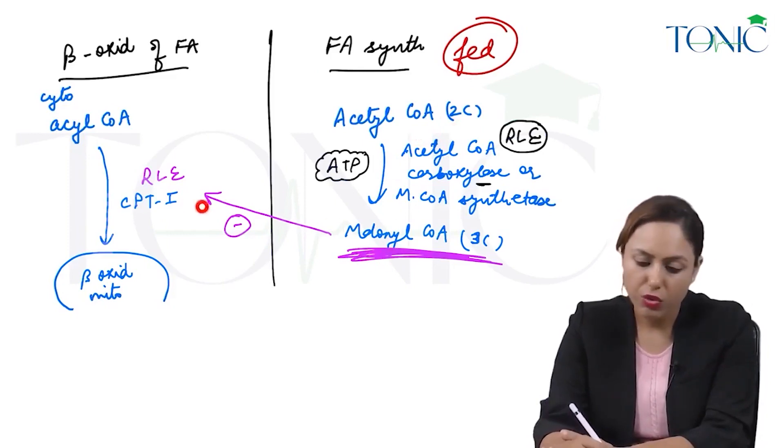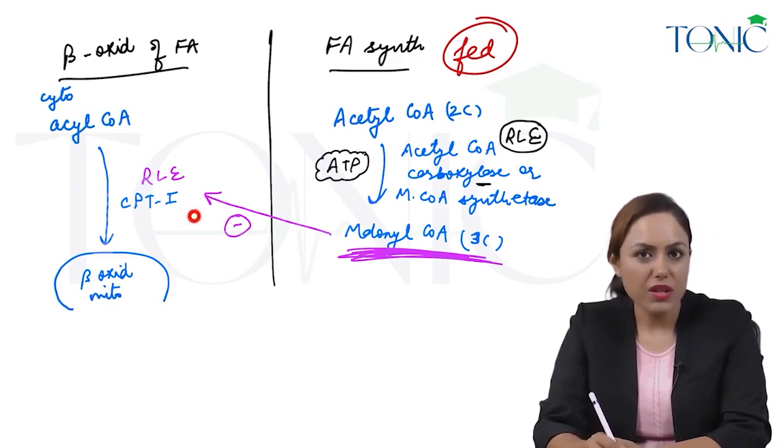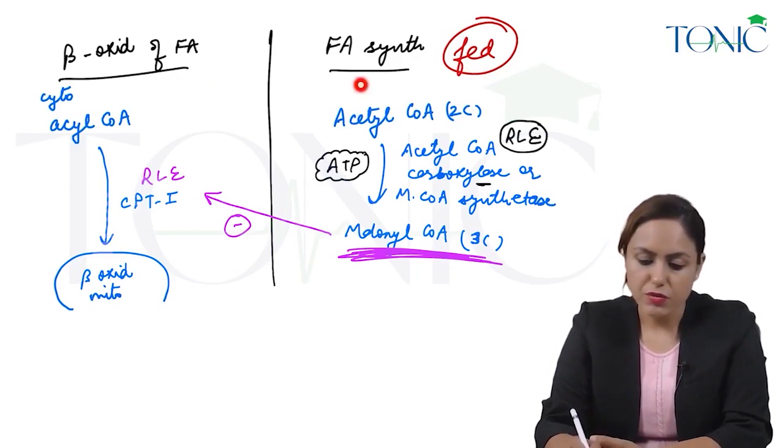Malonyl CoA will be formed, which will inhibit CPT1. So when CPT1 is inhibited, beta oxidation cannot occur. In fed state, fatty acid synthesis occurs but beta oxidation does not occur.